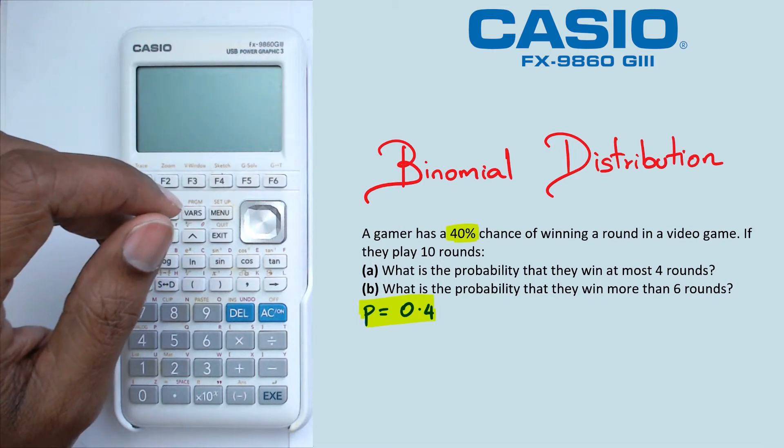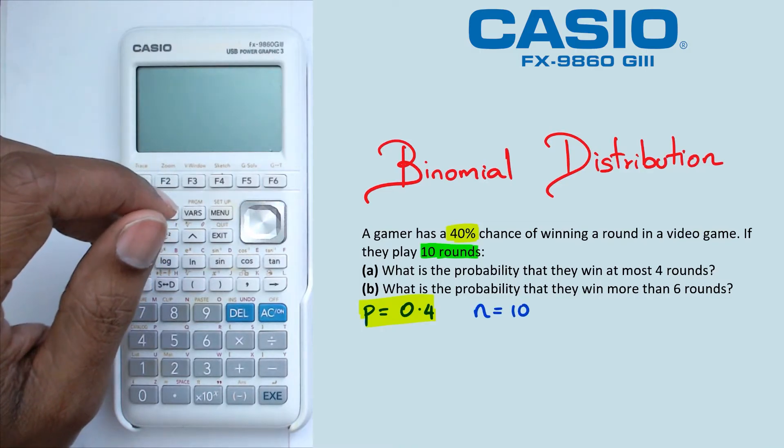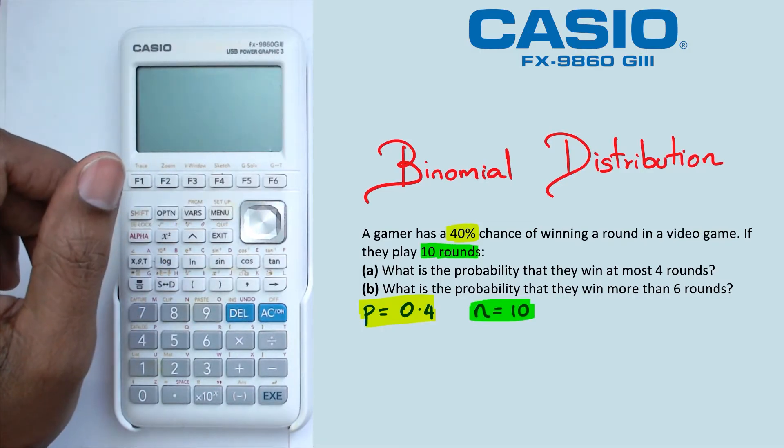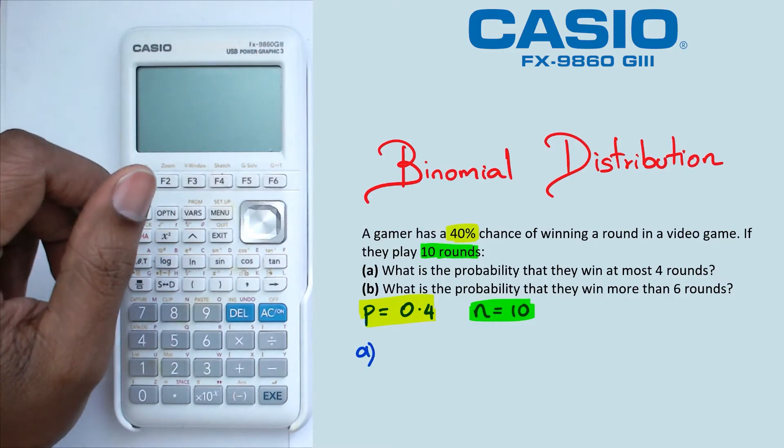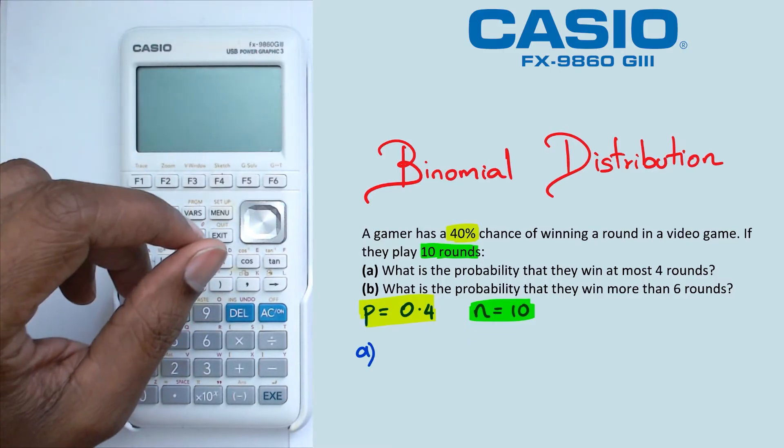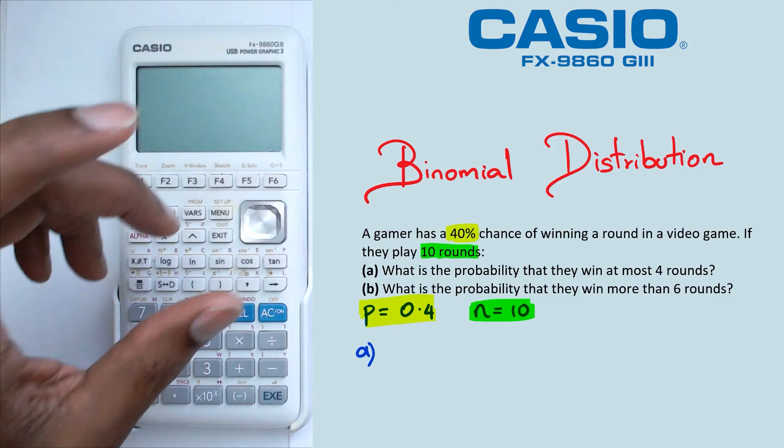Then we're going to be looking at the number of trials. In this case, it's 10, so N equals 10. And finally, looking at what question A is asking us. Now question A is asking us to figure out the probability of at most four rounds. So that means we're looking for probability of X less than or equal to four.